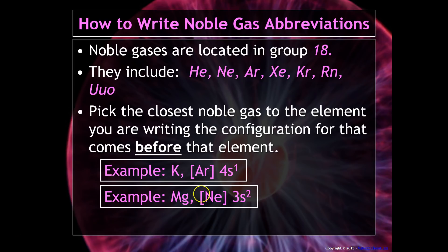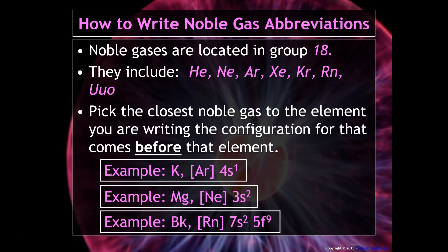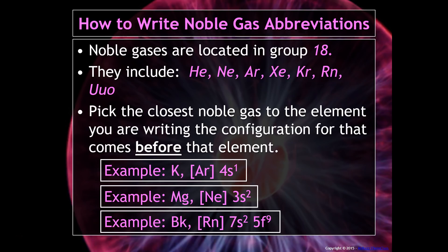For magnesium, the closest noble gas without going over the number of electrons is neon, which has 10 electrons — you can't use argon because that has 18. So you put neon in brackets for its 10 electrons and then write 3s2 for two more. For larger elements like berkelium, Bk, the closest noble gas without going over is radon. Be careful because you'll have to go to 7s2 and then into the f-block, so make sure you include that f-block.